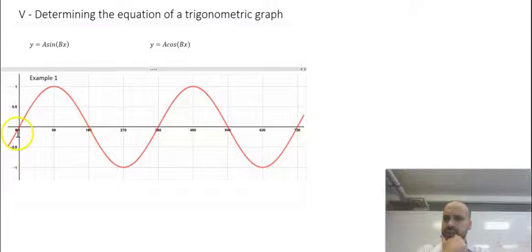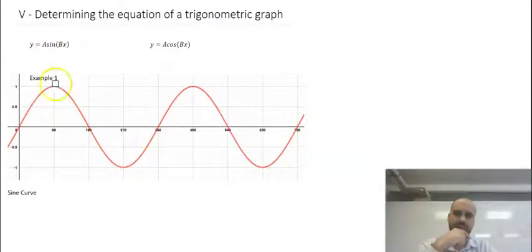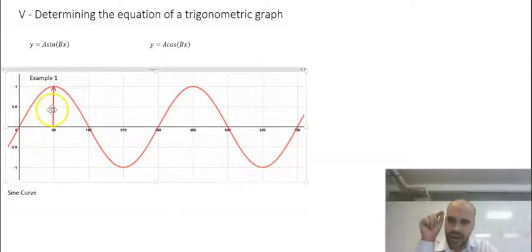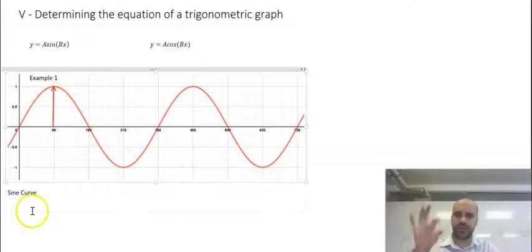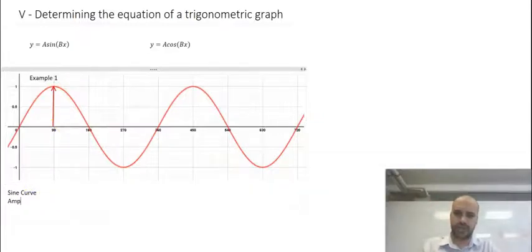Let's jump straight into this first example. It starts here at the origin. Now the graph that starts at the origin, for what we're looking at at least, is the sine curve. So we can say that this is definitely a sine curve. Now let's consider the amplitude next. We go from the center of the graph up to the top and measure that distance. That arrow is only one unit long, so the amplitude here is amplitude equals 1.